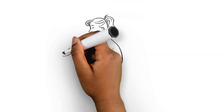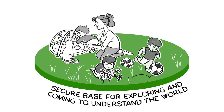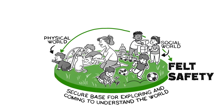Young children use their attachment figure as a secure base for exploring and coming to understand the world. When they feel safe, they will venture out and explore the physical world and explore the social world. That sense of felt safety is a crucial aspect to feel good about moving out into the world.